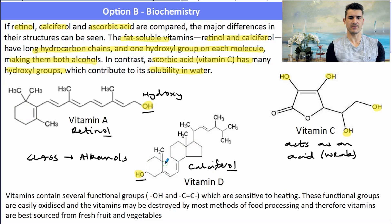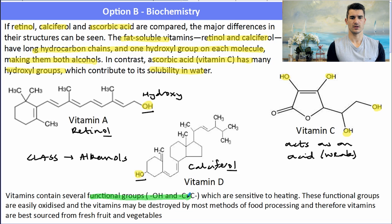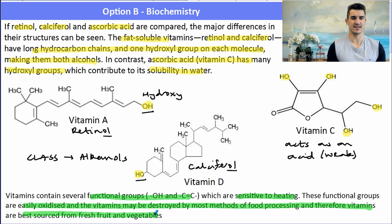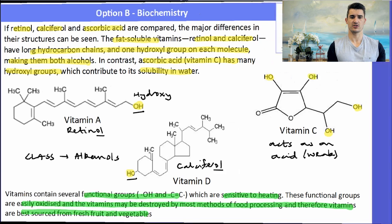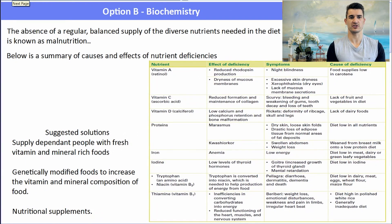You can also see that vitamins A and D contain some rings, while vitamin D has a structure very similar to cholesterol. Because vitamins contain several functional groups — especially the hydroxyl and alkene functional groups — they are sensitive to heating. They can be easily oxidised and destroyed by methods of food processing, and therefore vitamins are best sourced from fresh fruit and vegetables.